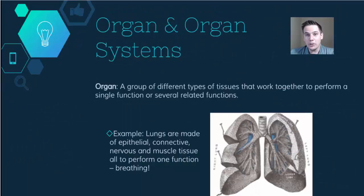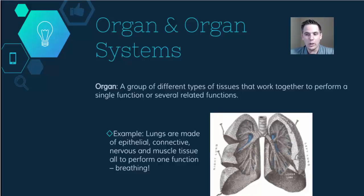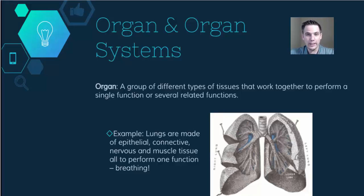When you take tissues that have one function and mix them together with other tissues with a different function, you get organs and organ systems. An organ is a group of different types of tissues that work together to perform a single function or several related functions. For example, your lungs are made of epithelial tissue, connective tissue, nervous tissue, and muscle tissue, all working together to perform one function: breathing.